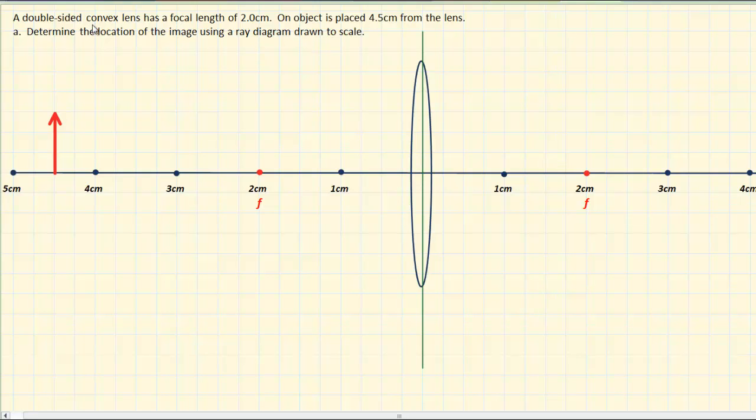Okay, to start this question, we've got a double-sided convex lens, which I've sketched in the middle of the page. Its focal length is 2 centimeters, and remember with a double-sided lens, there's a focal point on either side of the lens, 2 centimeters away from the dead center of the lens, which is represented by this green line. So I've labeled those in red, and I've got an object at the 4.5 centimeter mark from the center of the lens. So DO is 4.5 centimeters, which we can see is represented by this red arrow.